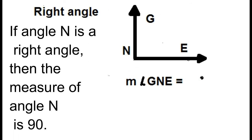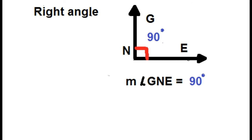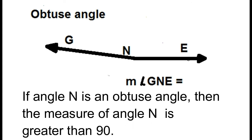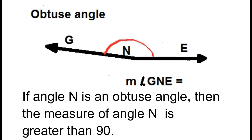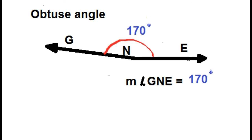If angle N is a right angle, then the measure of angle N is 90 degrees. If angle N is an obtuse angle, then the measure of angle N is greater than 90 degrees. For example, angle GNE is an obtuse angle because the measure of angle GNE is greater than 90 degrees — equal to 170 degrees.